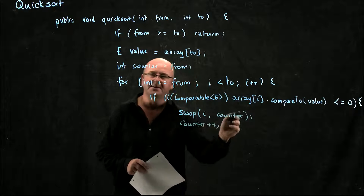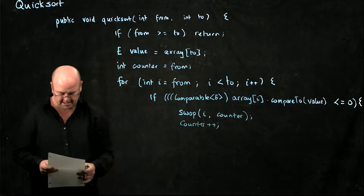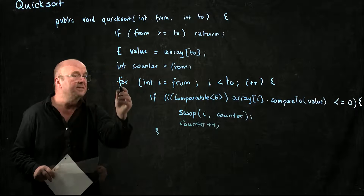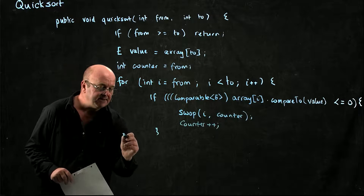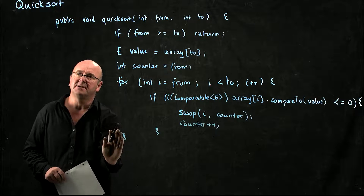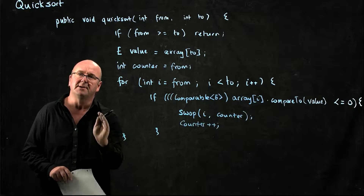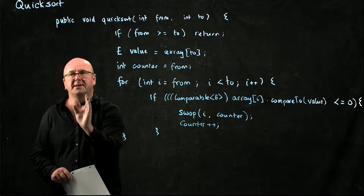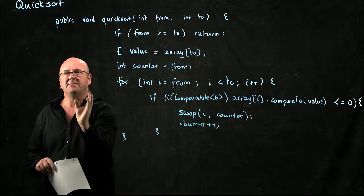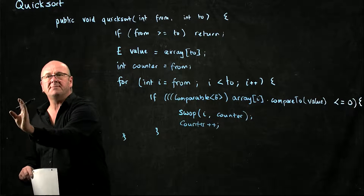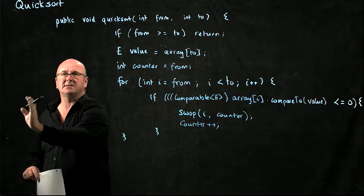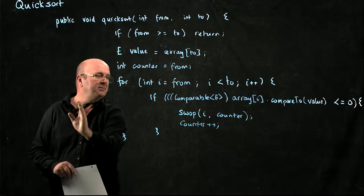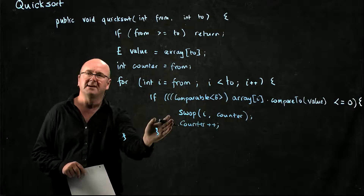In fact, you could increment the counter in the swap call itself. That's the end of the iteration — that's the piece that's doing the work. We're going through the list up until the element before the pivot, and we're saying: if you're smaller than the pivot, we're going to move you to the beginning of the list. If you're larger than the pivot, we'll leave you where you are and we won't increment the counter.